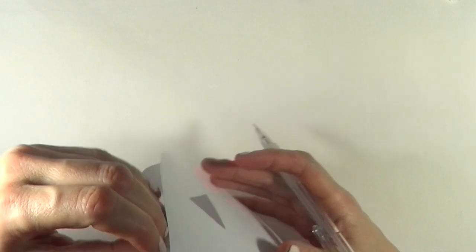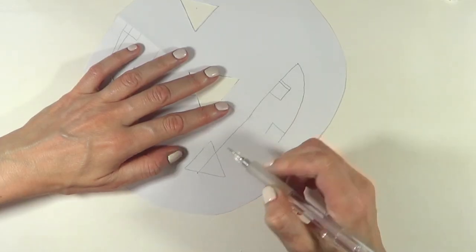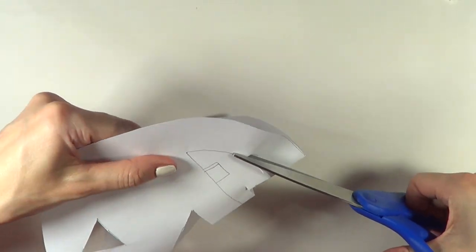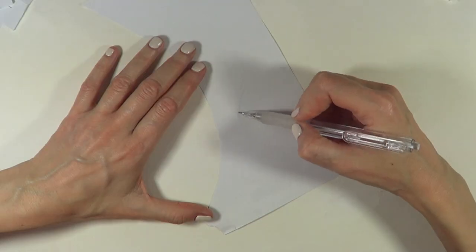I'm just going to complete the mouth like this. Doesn't have to be perfect at all. And then I'm just going to cut it like this. I'm going to be drawing the stem and cutting this.